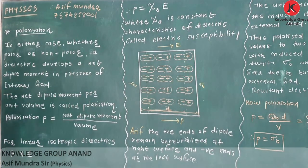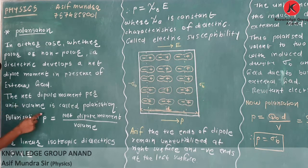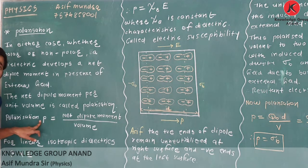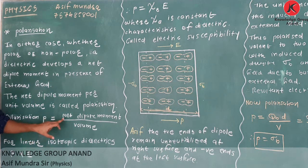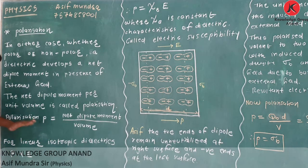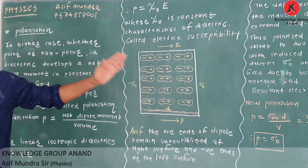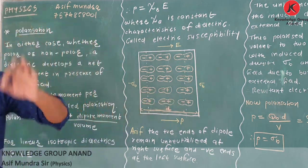So here we have to define our quantity. The net dipole moment per unit volume is called polarization. This is the definition of polarization. Polarization is also indicated by P, which is equal to dipole moment per unit volume. You have to remember this definition. The concept is that each and every dipole aligns with the direction of the electric field.